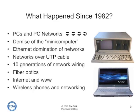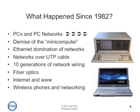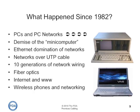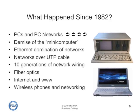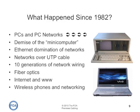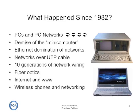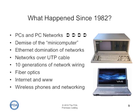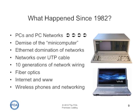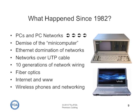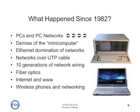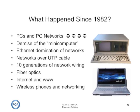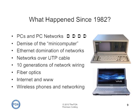Since that AT&T survey, a lot has happened in premises communications. We've had the development of PCs and PC networks, the demise of the mini-computer, the domination of networks by Ethernet, networks over unshielded twisted pair cable, and 10 generations of network copper wiring. We've had the advent of fiber optics, the internet, and the worldwide web and how that's affected networks and communications. And we've had wireless phones and networking developed to compete and work with premises cabling.